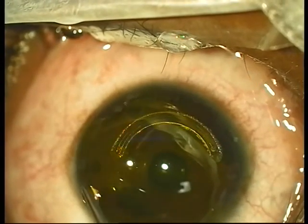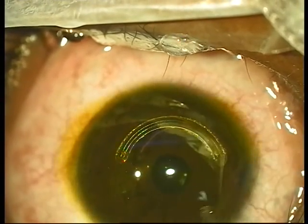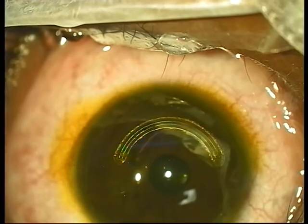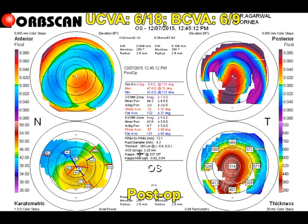The epithelium is then removed for the simultaneous cross-linking procedure. Once this is done, the cornea is soaked in riboflavin for 30 minutes, followed by cross-linking. We can see here the post-operative OPD scan at the sixth post-operative day.